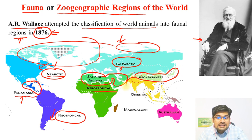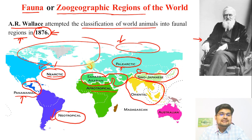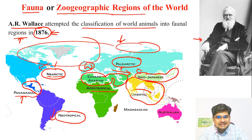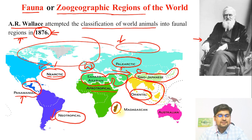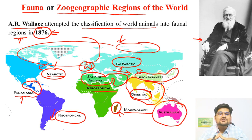Then you have something called Sino-Japanese, and then the Oriental region — referring to the East from the West, always called Orient. And there is something very unique called Madagascan, related to Madagascar. Then we have the Australian region. So these are the zoogeographic regions of the world.